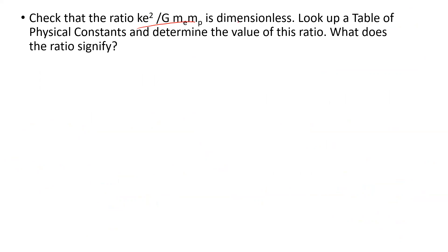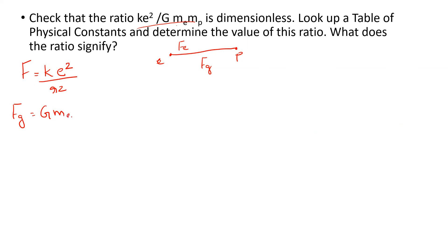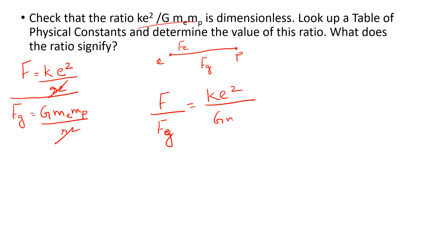Question 3: Check that the ratio K e² divided by G me mp is dimensionless. Electrostatic force between one electron and one proton uses the formula F = K q1 q2. The ratio of electrostatic force to gravitational force for one electron and one proton gives us K e² / G me mp.